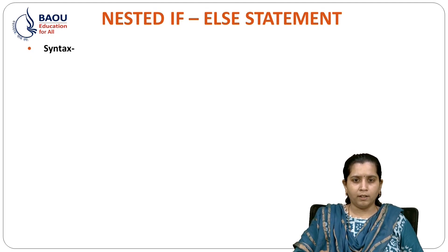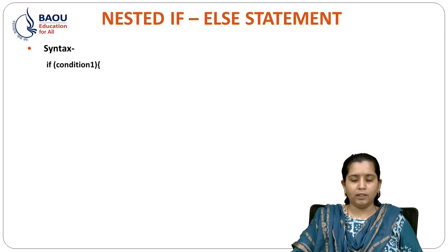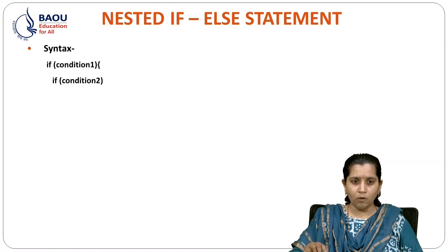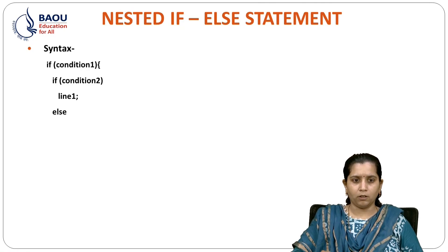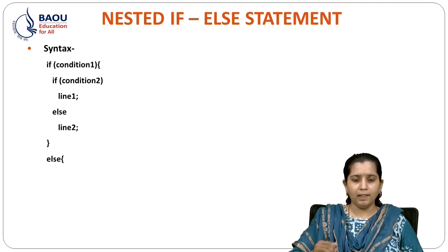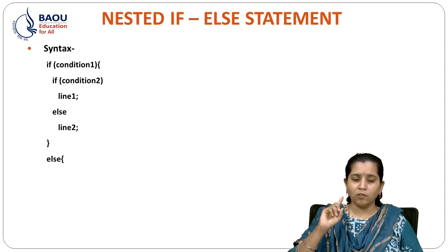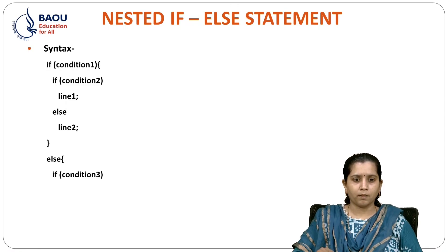Now let's see syntax of nested IF ELSE statement. First, we will check if condition is true or not. If it is true, then the IF block will be executed. In that, another condition is applied — if this inner condition is true, then the inner IF will be executed; otherwise, it will go to the inner ELSE block. After that, the outer ELSE will come — this is the ELSE of the first IF condition. If that first condition is false, then this ELSE will be executed.